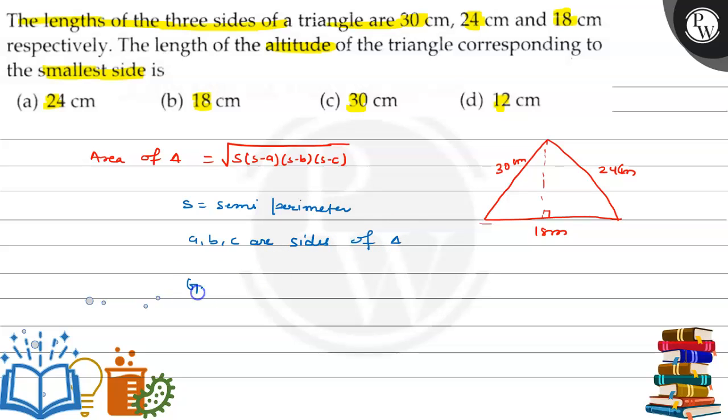First, let me write the given information. Given: the sides of the triangle are 30 cm, 24 cm, and 18 cm.